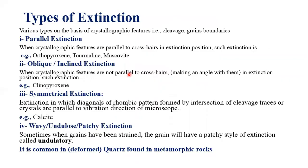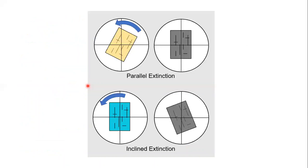What is inclined or oblique extinction? When crystallographic features are not parallel to the cross hair — when they make an angle with it in the extinction position — such extinction is called oblique or inclined extinction. Clinopyroxene is one of the minerals which possesses oblique or inclined extinction, as you can observe here.